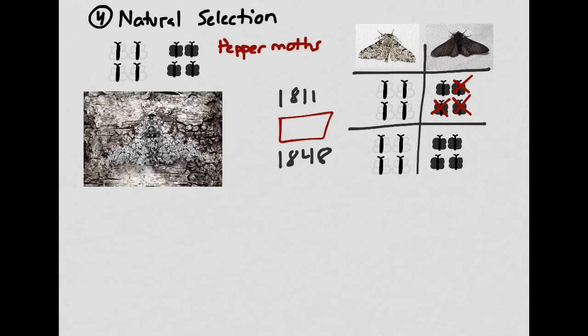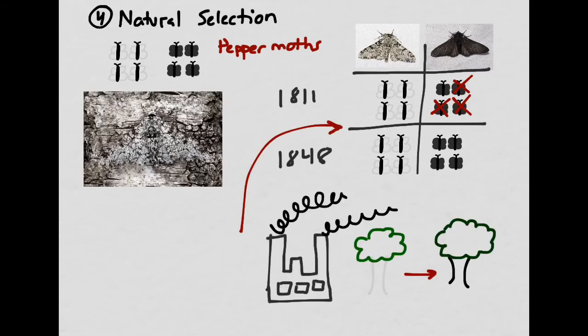And at this time, the only form of power known was either water power, but increasingly coal power. So the Londoners were burning lots of coal to keep their houses warm, but now also using coal to do things like run factories and run locomotives. And coal produces a huge amount of soot and a huge amount of smog. And so during this time period, between 1811 and 1848, the trees of London got pretty gross and pretty covered in soot and smog.